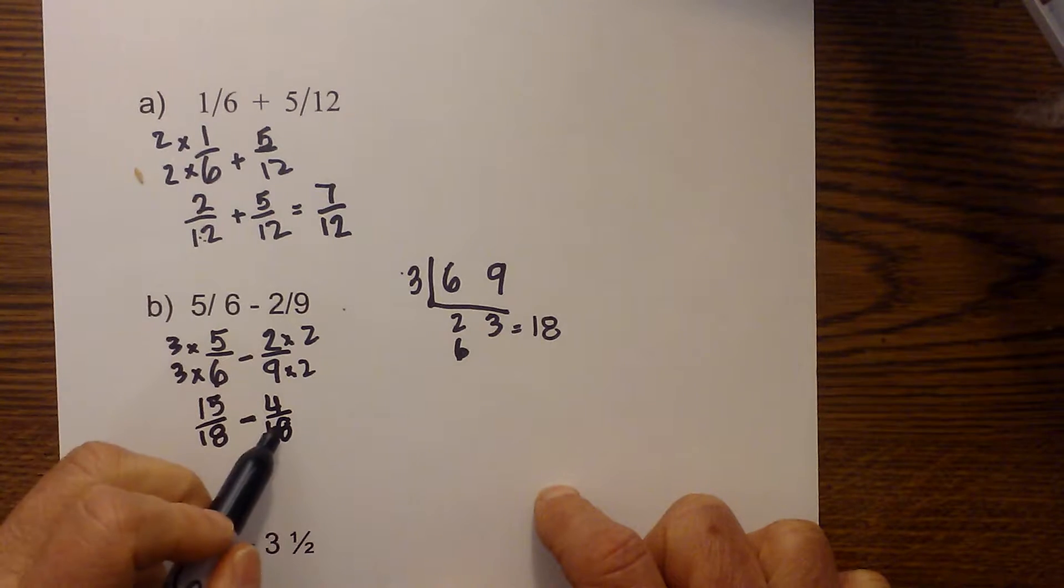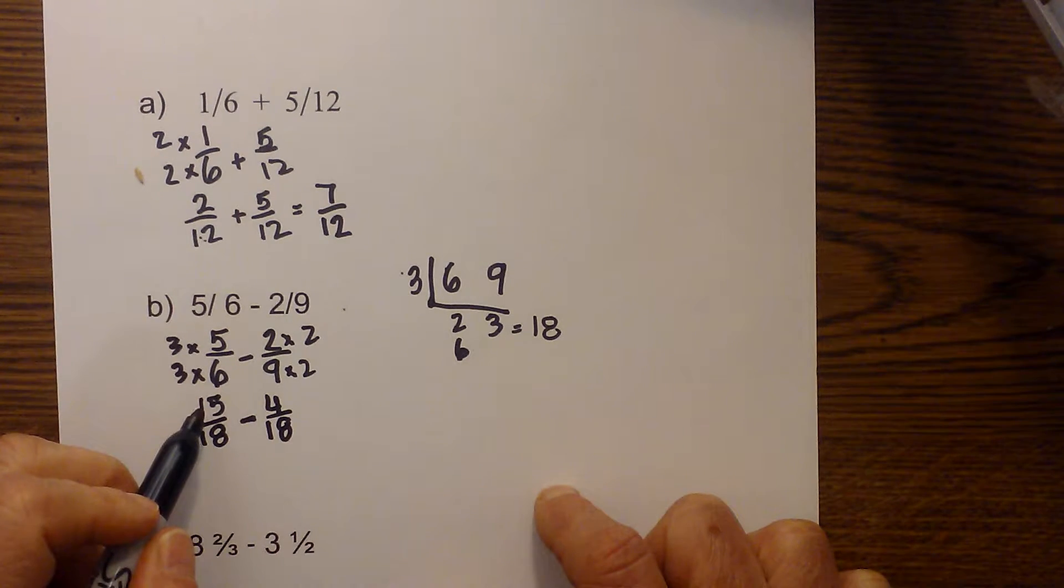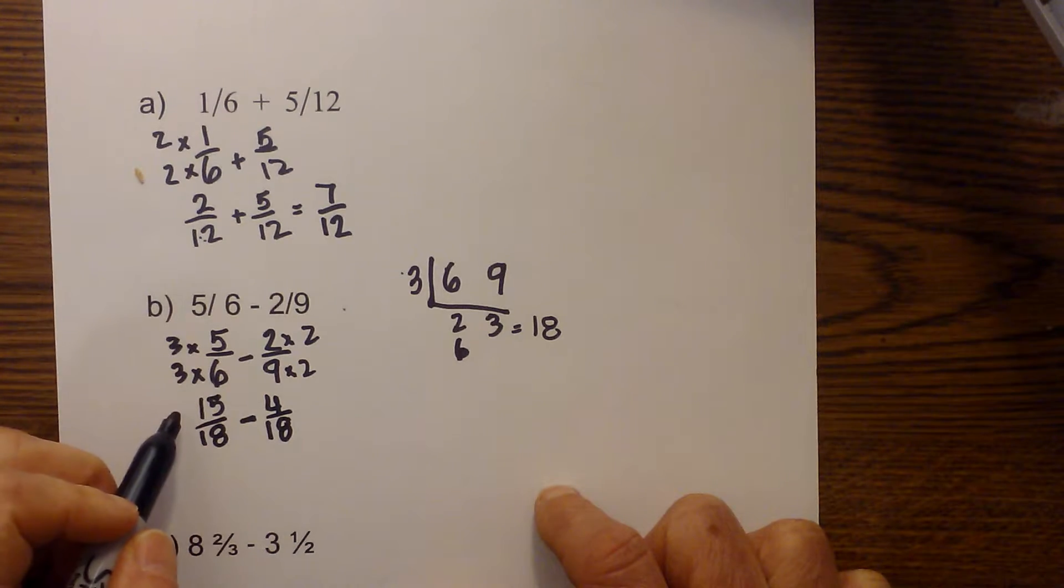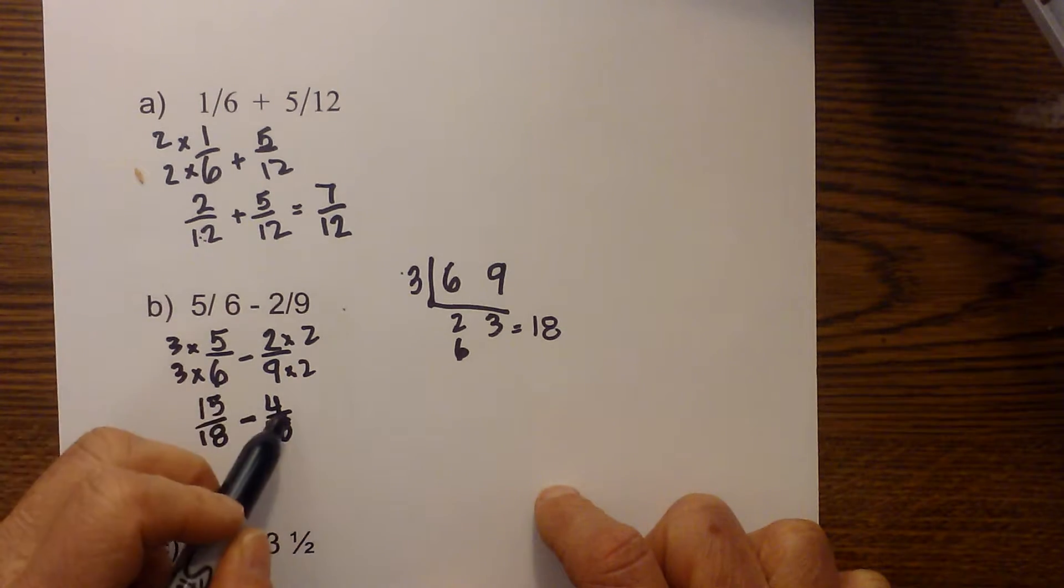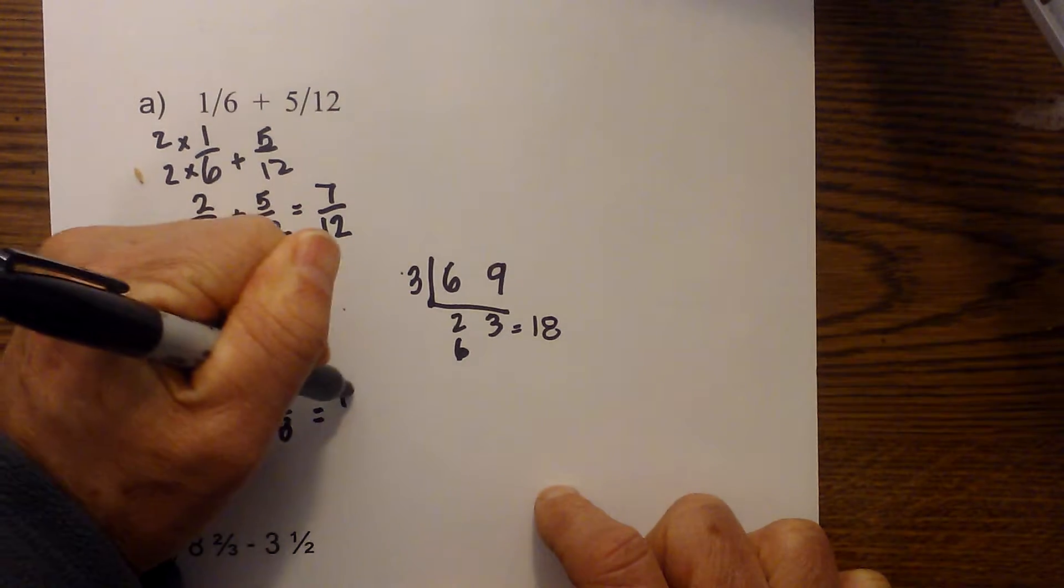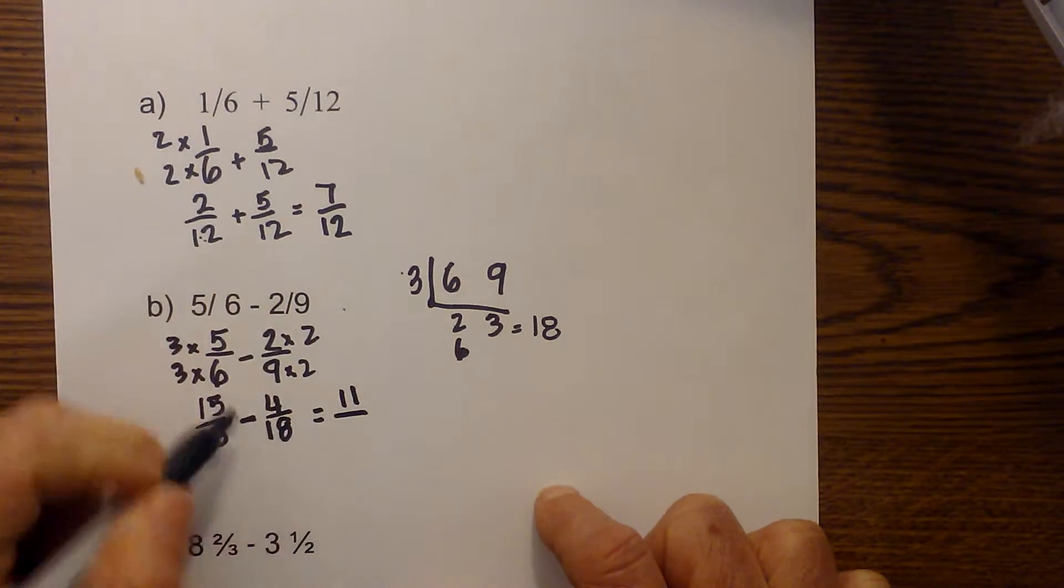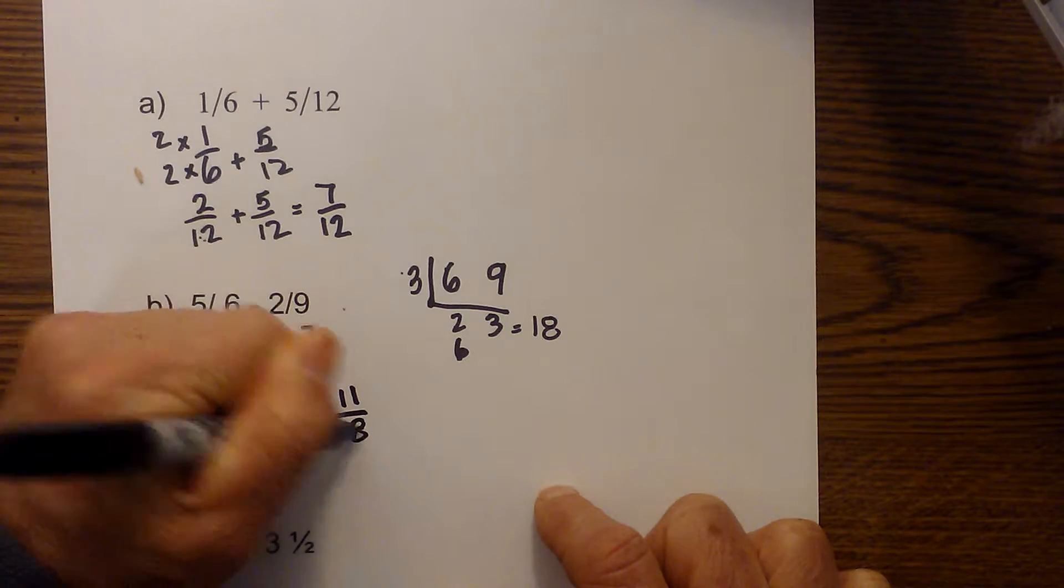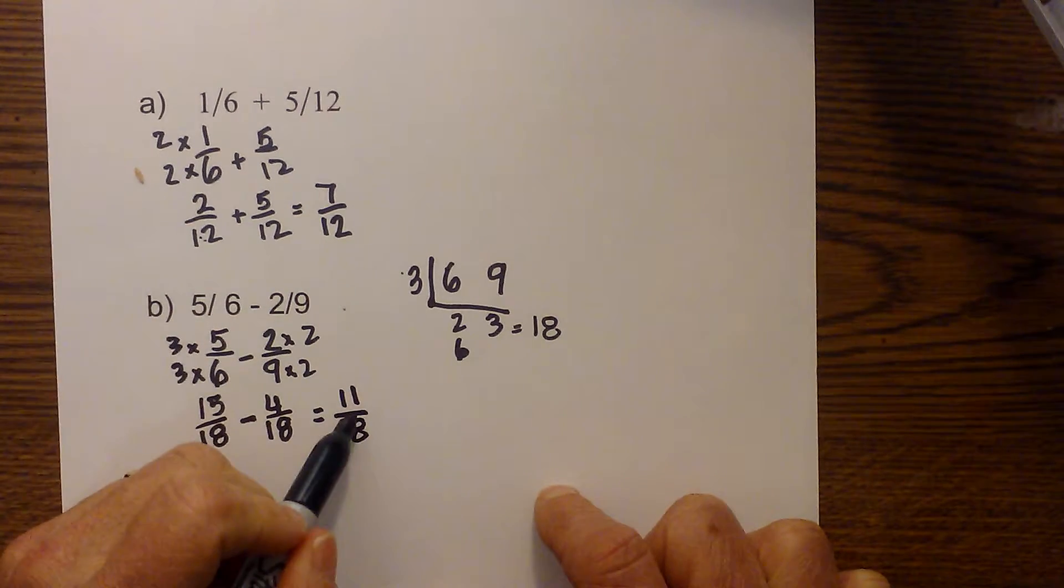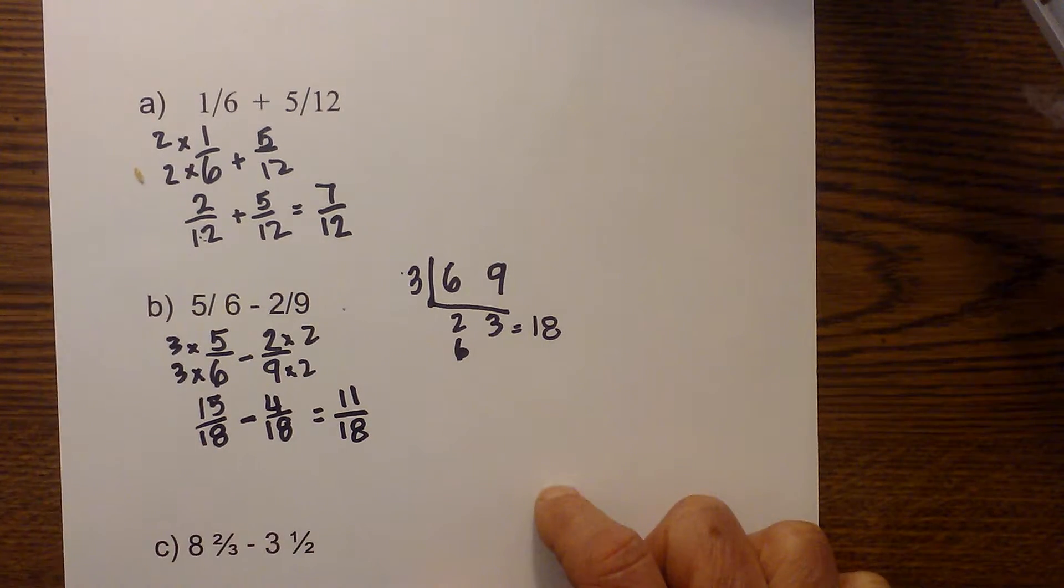I now just subtract. And let's check our math on this one. We have fifteen minus four is equal to eleven. And remember, we keep these the same because we have a common denominator. That becomes eighteen. And again, we cannot simplify from there.